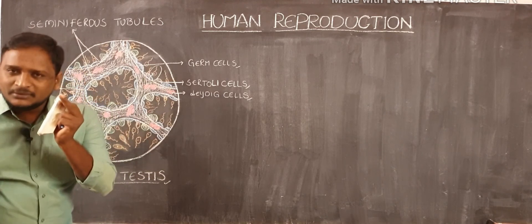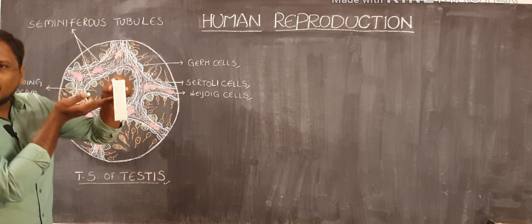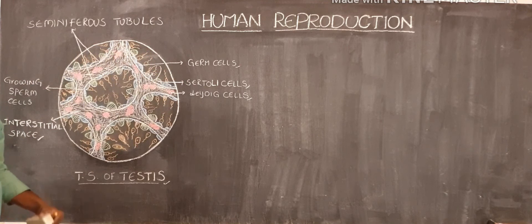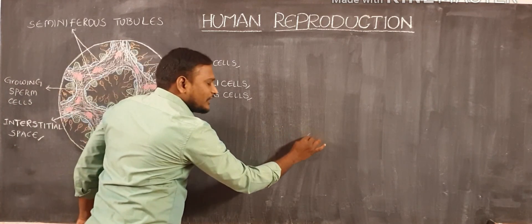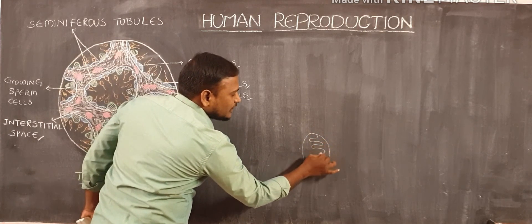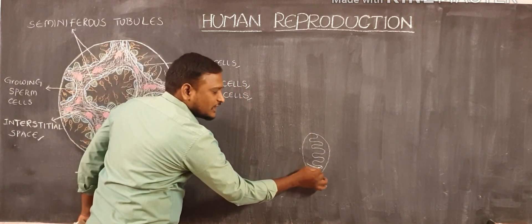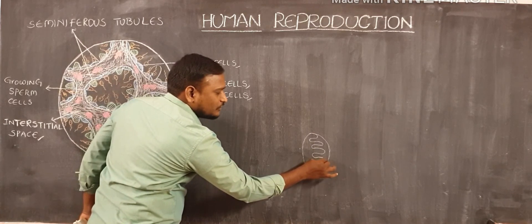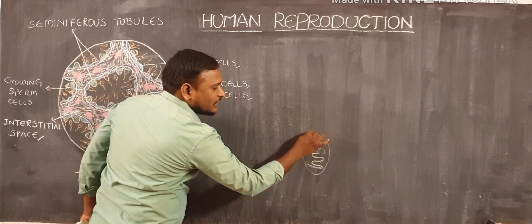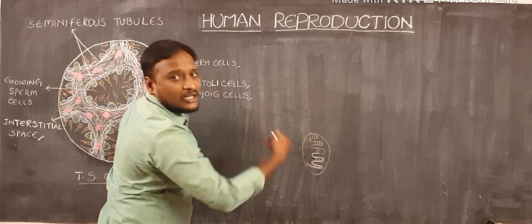The testes is an oval-shaped structure. If we cut the testes in a transverse section mode, we can observe this kind of appearance. In the testes, we already discussed that the testes divides into nearly 250 compartments by the help of the tunica albuginea. When the tunica albuginea penetrates into the testes, it divides the testes into different compartments — nearly 250 compartments are formed because of the protruding tunica albuginea.